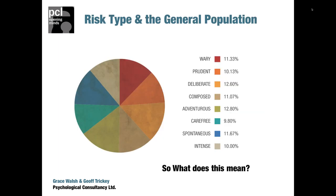People are very varied, and within the general population there is a very even distribution of those eight risk types — a fact we can state with great confidence from the thousands of people who have completed the Risk Type Compass. With roughly a one-in-eight chance of a person being any given risk type, you can be very sure you're going to encounter all of them in your team development exercise.